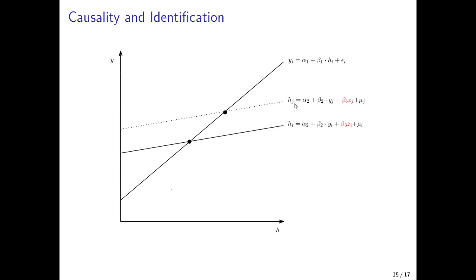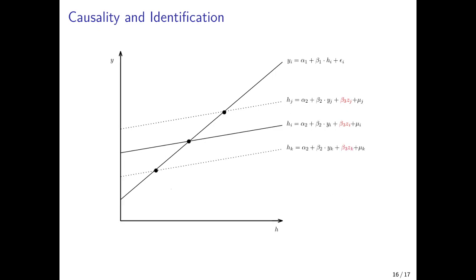So what we would then observe is, for example, a shift to this equation here, a shift down to this equation here. And all of them would lead to different intersections with the equation that gives us the causal effect of health on income.